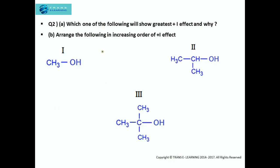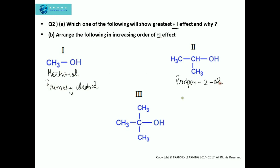Next question: which one of the following will show plus I effect and why? And the second part: arrange the following in increasing order of plus I effect. We have three structures — the first one is methanol, which is a primary alcohol; the second one is propane-2-ol, which is a secondary alcohol; and the third one is 2-methylpropane-2-ol, which is a tertiary alcohol.